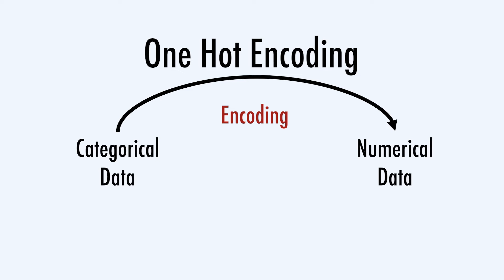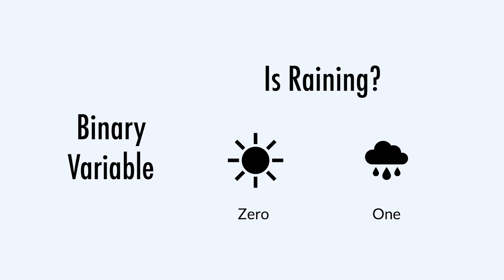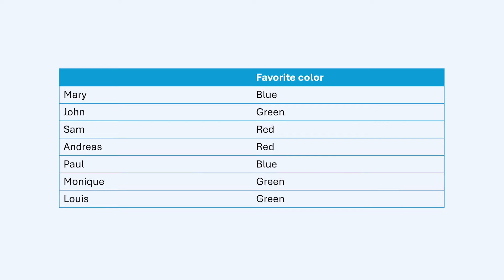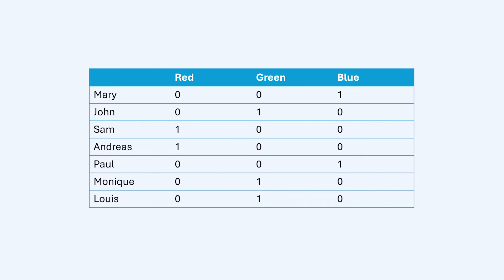One-hot encoding is a possible process of converting categorical data variables into binary variables. By binary variables, I mean a feature that assumes two values: 0 or 1. In one-hot encoding, we transform categorical data — such as colors: red, green, blue — into numerical data. By applying one-hot encoding to a categorical variable, we transform the feature into one or more binary features, each representing a possible value of the original categorical variable. In the case of our color column — red, green, and blue — we create one column for red, another for green, and another for blue. Each column says if that color is present or not, using 0 and 1 to represent no and yes respectively. Note that these new columns will substitute the original color feature.